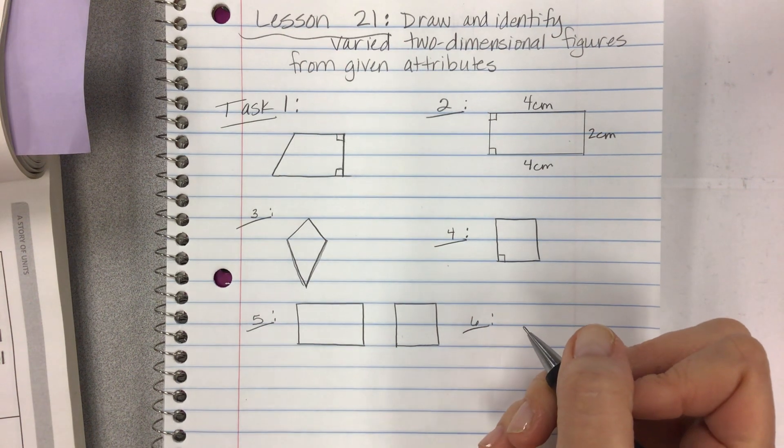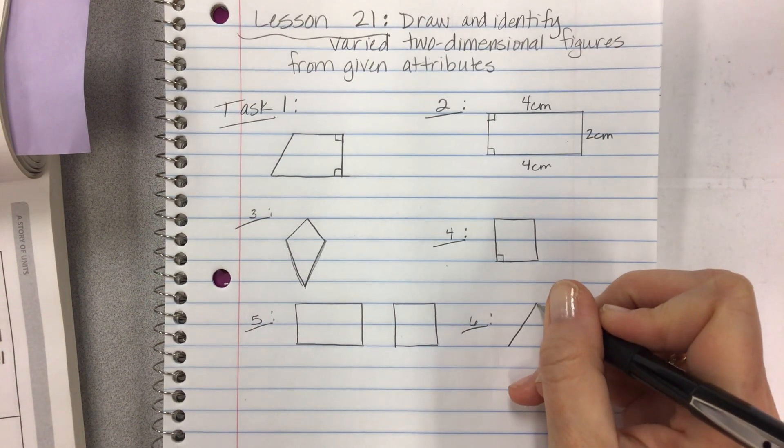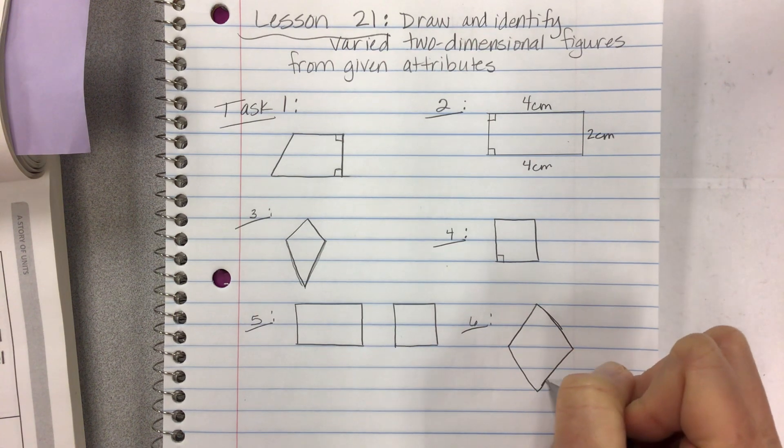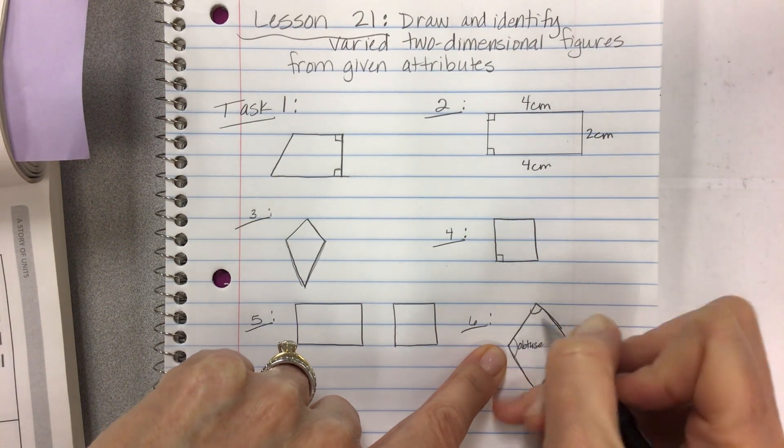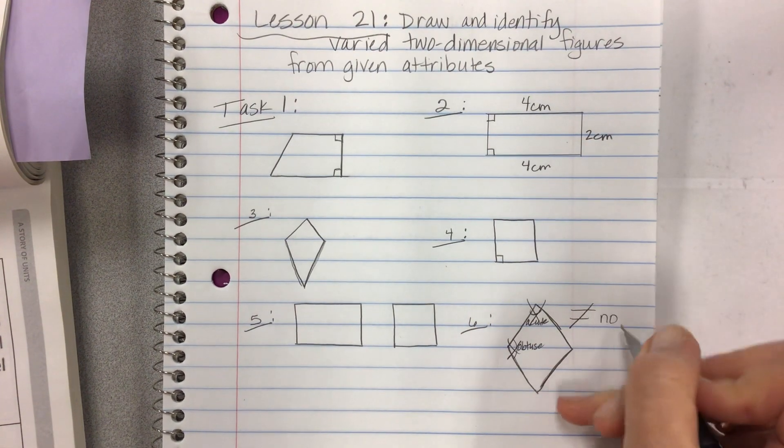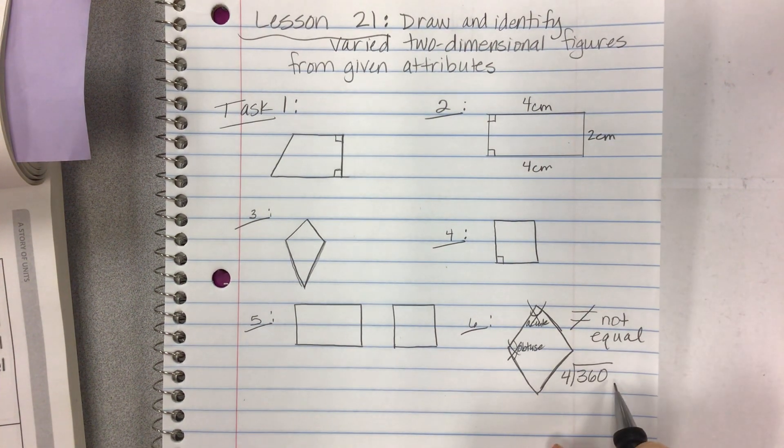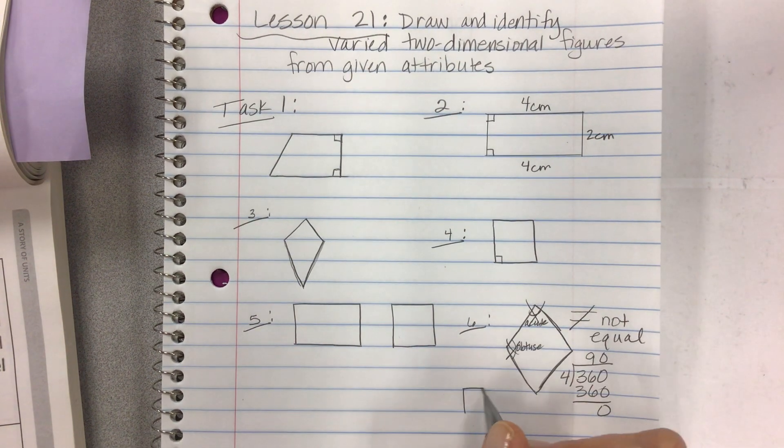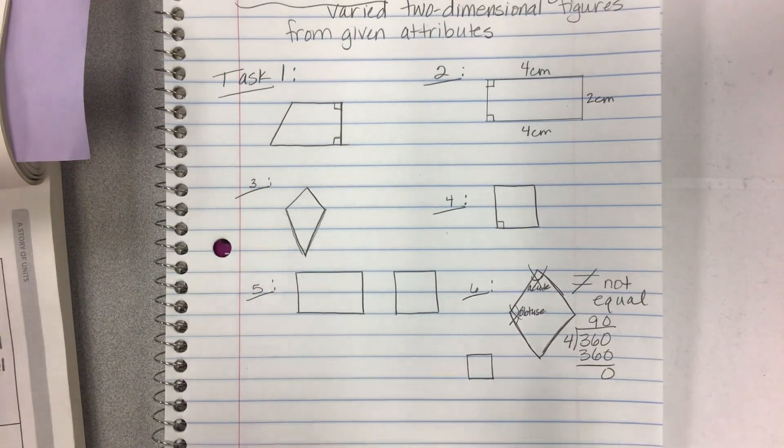And for six, draw a rhombus with four equal angles. I could try to draw this rhombus, but notice what's going to happen. We're going to have obtuse and acute. Now, is that going to follow the directions? No, they're not equal. Not equal angles. So what are we going to do? Well, you have to divide 360 by four if you want them to be even. And so the only way you can get that is by having a square as your rhombus with four equal angles. So that's what these tasks are all about.